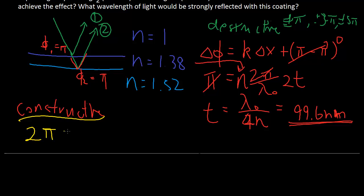we know the thickness is fixed, we want to know what λ we're working with. But for constructive, we're going to use 2π, and so that's 2π and λ₀, 2t, we already know t,